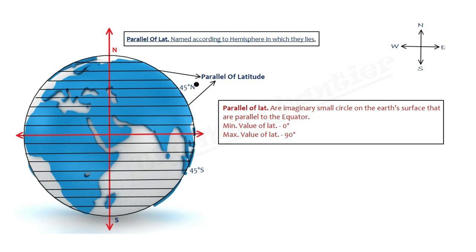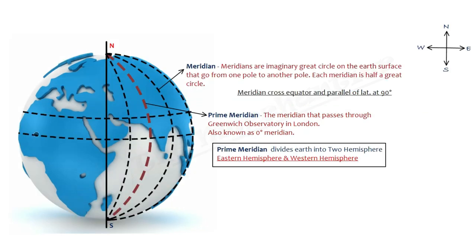If it is 45 degrees and it is Southern Hemisphere, then we will point out 45 degrees south. We have read about equator and parallel of latitude.